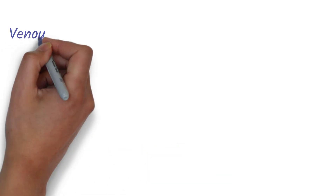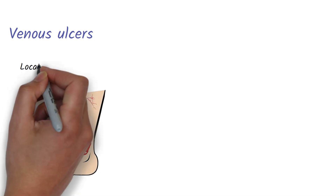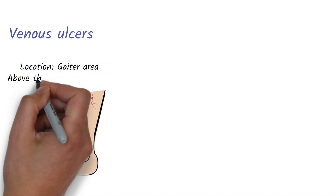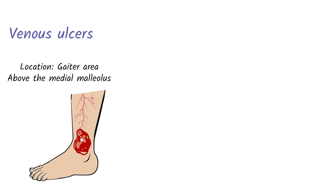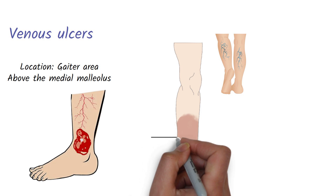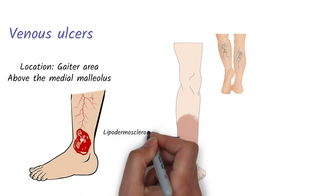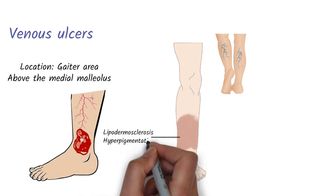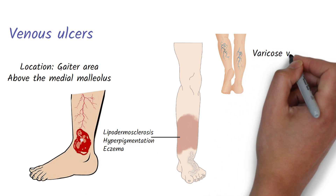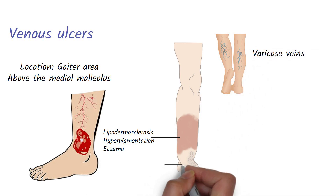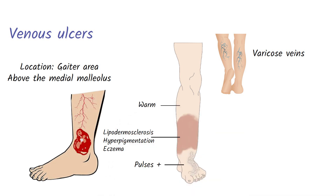Venous ulcers, on the other hand, typically occur in the gaiter area. The gaiter area is the area at the inner side of the ankle above the medial malleolus — it is where venous hypertension is the highest. The skin changes seen in venous ulcers are lipodermatosclerosis, hyperpigmentation, eczema, and varicose veins. You will be able to palpate pulses in venous ulcers unlike arterial ulcers, and the skin will be warm to touch due to pooling of blood.